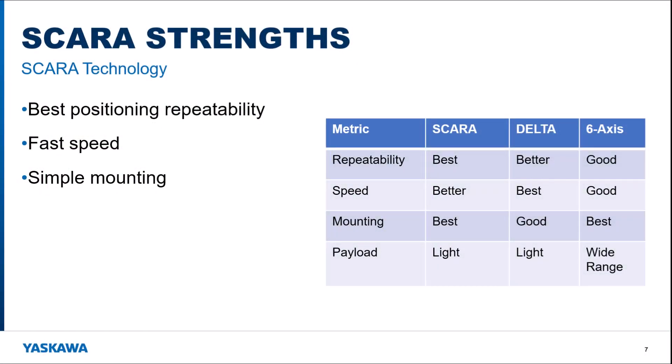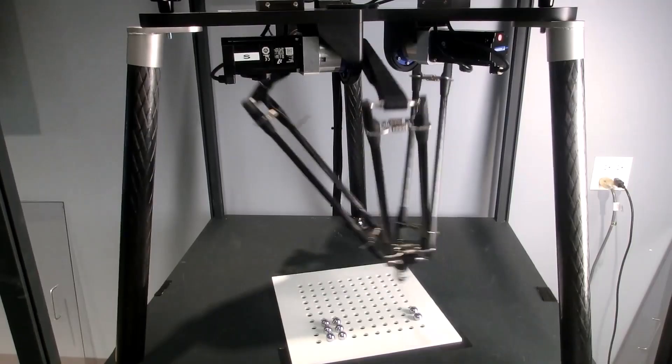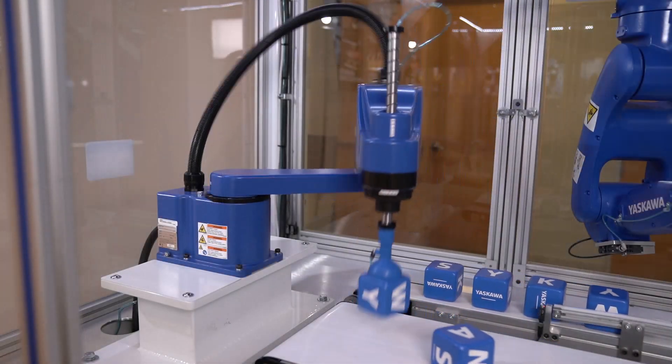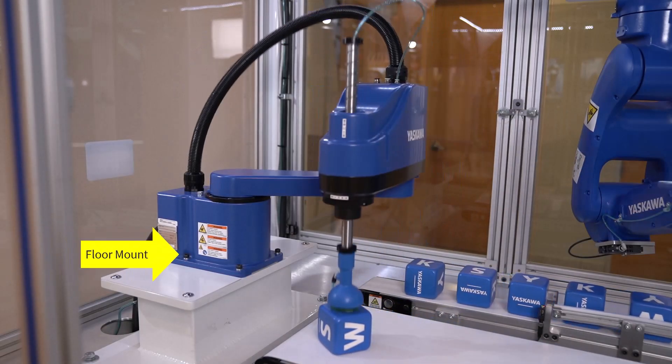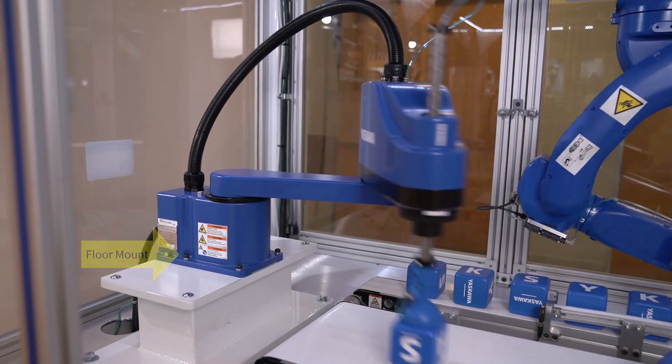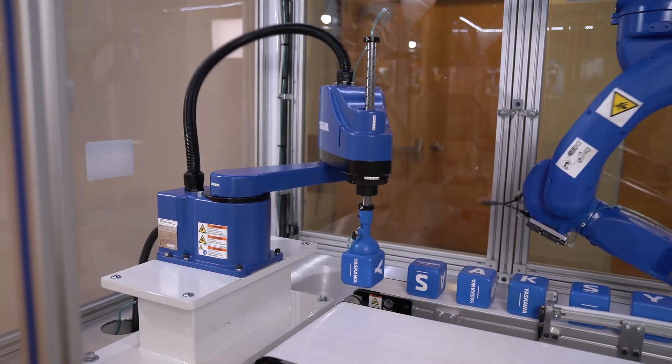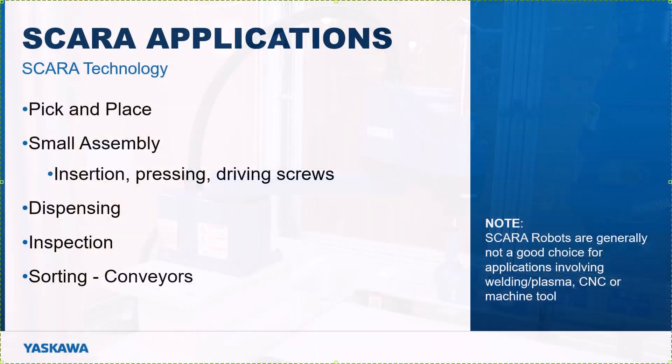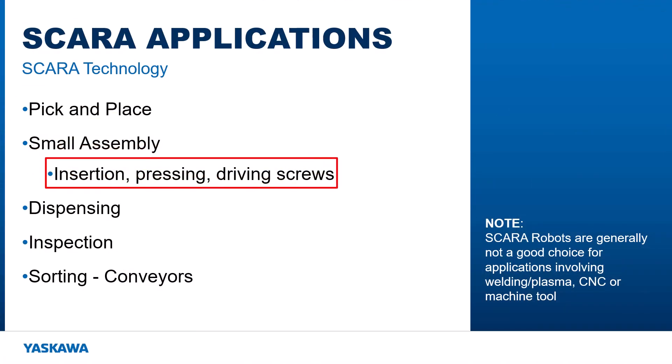This table summarizes the SCARA robot compared to other articulated robot mechanisms. The SCARA has the best repeatability of all articulated robots. And while a Delta robot is still a faster way to move light loads, the SCARA can be bolted down with a simple floor mount rather than an overhanging structure. These characteristics make SCARA a great choice for fast pick and place of small parts with high repeatability. The same applies to assembly processes involving small part insertion, pressing, or even driving screws with the rotational axis.